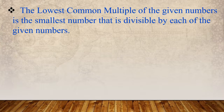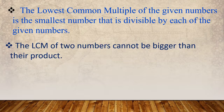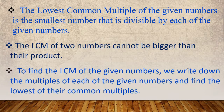The lowest common multiple of the given numbers is the smallest number that is divisible by each of the given numbers. The LCM of two numbers cannot be bigger than their product. To find the LCM of the given numbers, we write down the multiples of each of the given numbers and find the lowest of their common multiples.